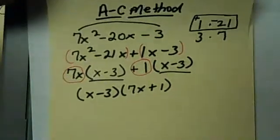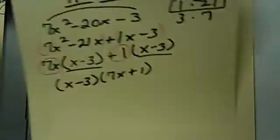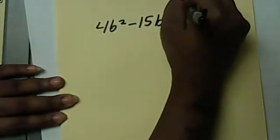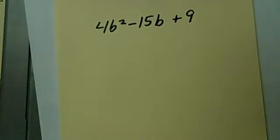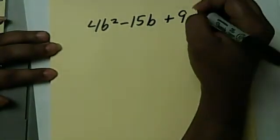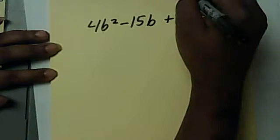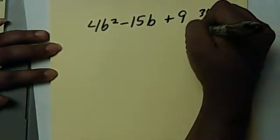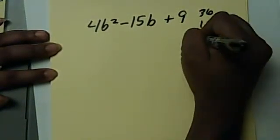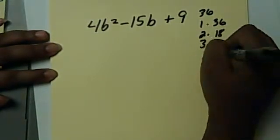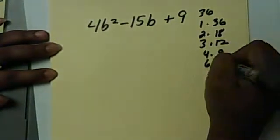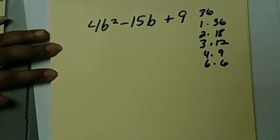Okay, let's do another example using the AC method. The same problems that I used using the bottoms-up method. We're going to have 4b squared minus 15b plus 9. Again, 9 times 4 is 36. I'm going to list the factors of 36 as 1 and 36, 2 and 18, 3 and 12, 4 and 9, and 6 and 6.